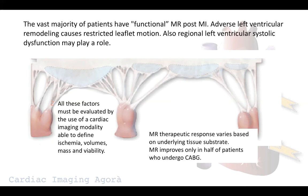So you need to define ischemia, volumes, mass, and presence of viability or necrosis in the territory where you have the papillary muscle — in particular in the lateral wall, where there is the bigger papillary muscle. Also because the choice of treatment in this patient can vary greatly, given that only about half of patients have an improvement in mitral regurgitation after revascularization by CABG.